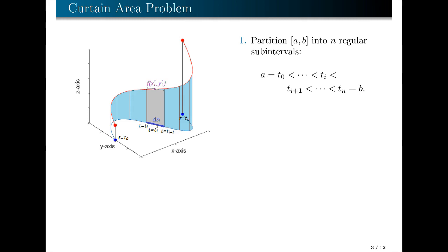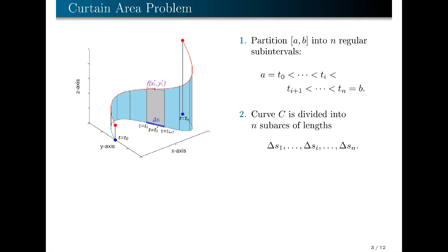Each of the endpoints will correspond to a point on your curve c. For instance, one point corresponds to t = tᵢ, while the next corresponds to t = tᵢ₊₁. In effect, what we have done is divide your curve c into sub-arcs. There will be n of them, and we denote the lengths of those sub-arcs by Δs₁, and so on, up to Δsₙ. Note that these lengths are not necessarily equal.